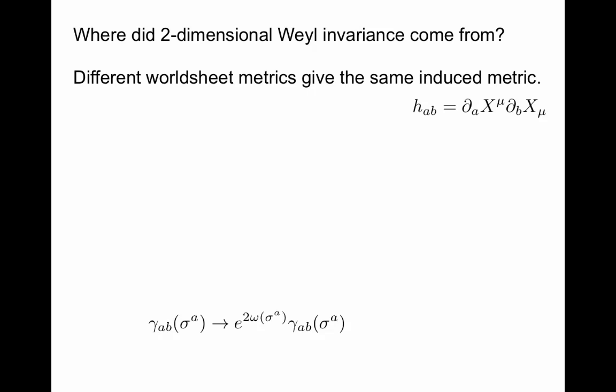So these are the symmetries of the Polyakov action. Sometimes diffeomorphism is shortened to diff. Now where did this two-dimensional Weyl invariance come from? Different world sheet metrics give the same induced metric. That's the reason. So Nambu-Goto had no gamma. If you change gamma, it doesn't notice. So this is an entirely new symmetry that came from introducing this new world sheet metric.